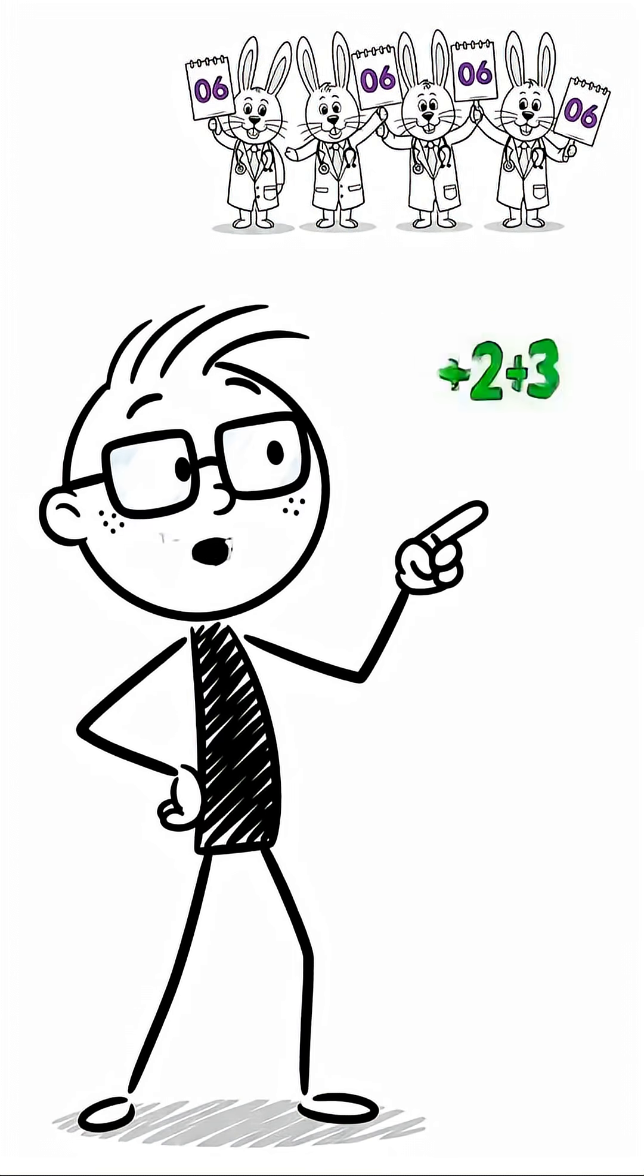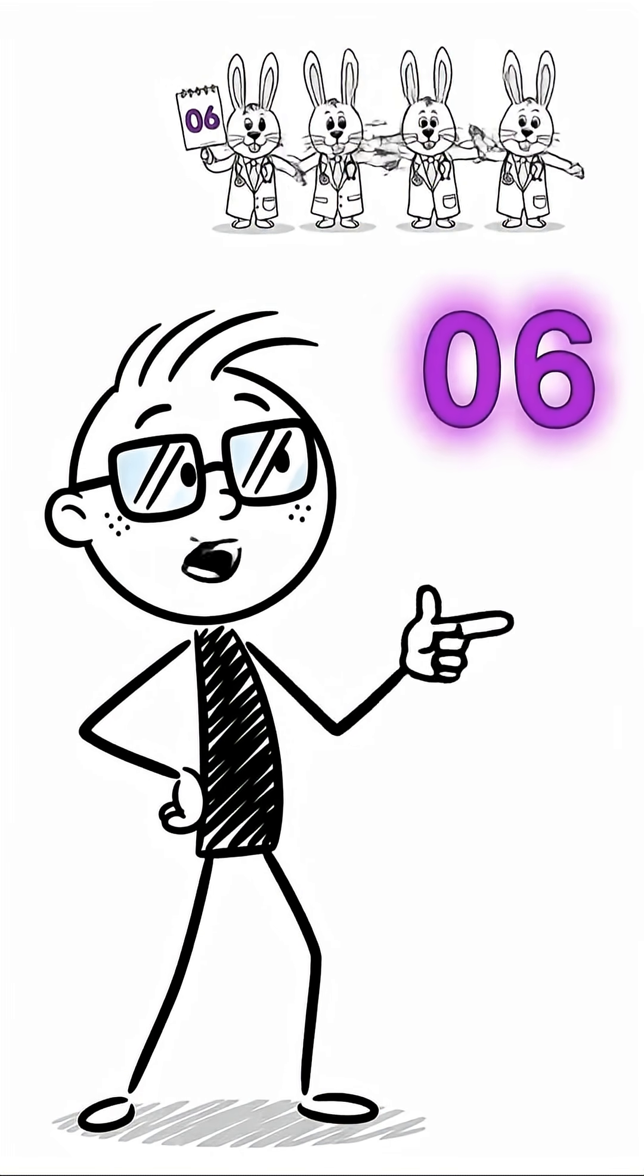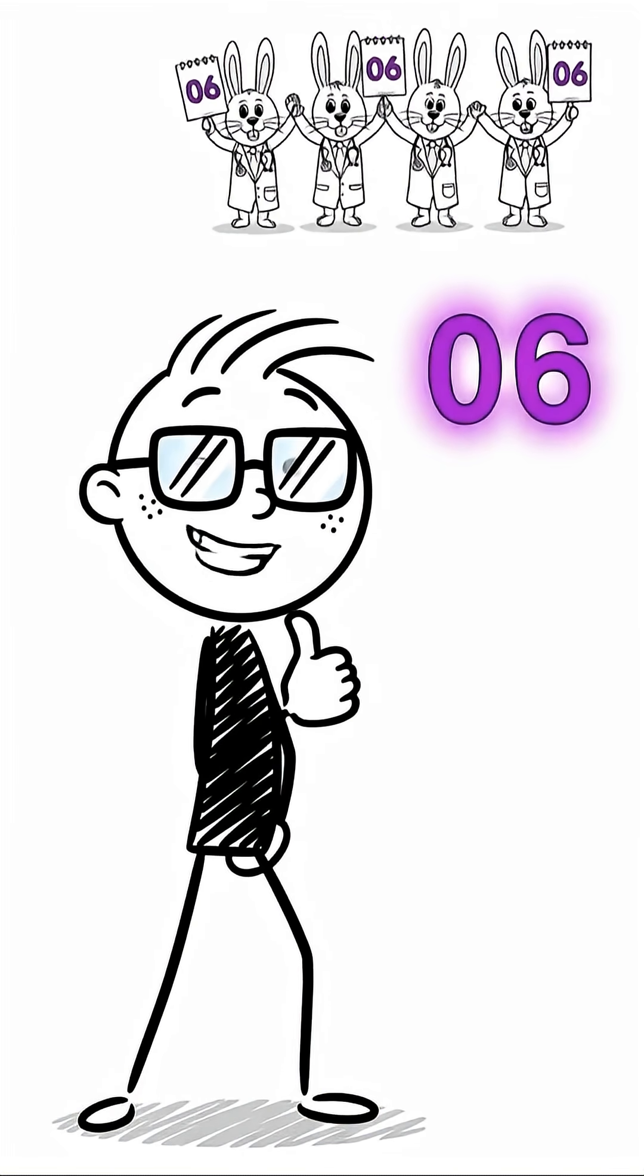Step two, multiply the small numbers. Two times three is six, but since we are in base 100, we write zero six.